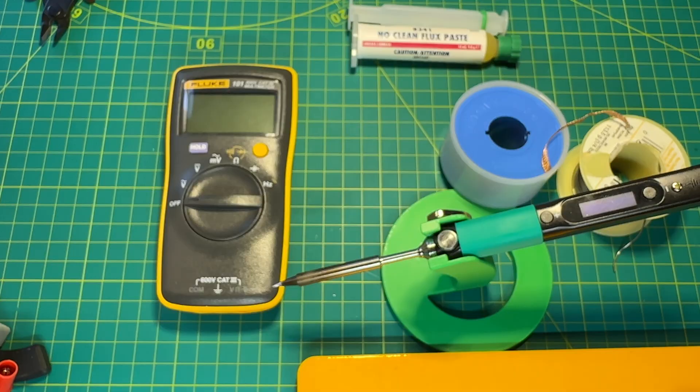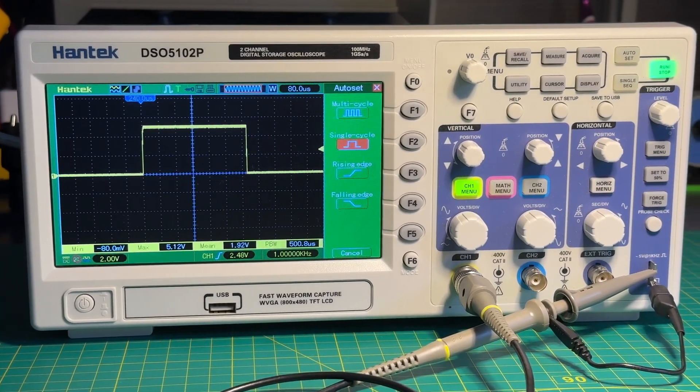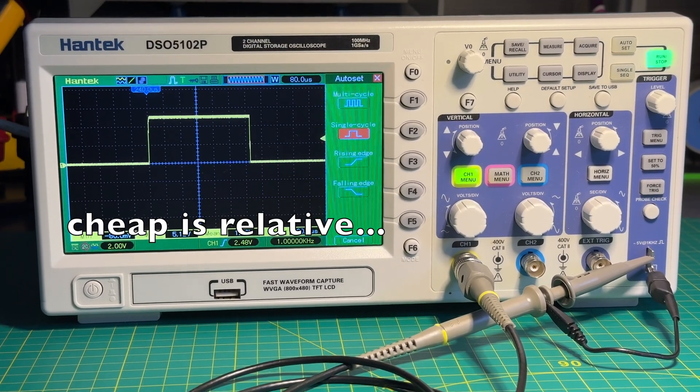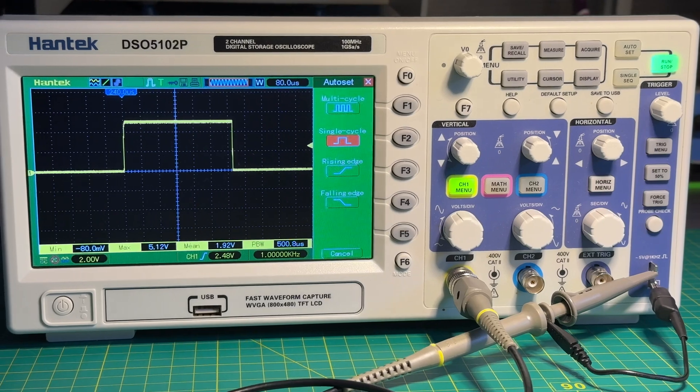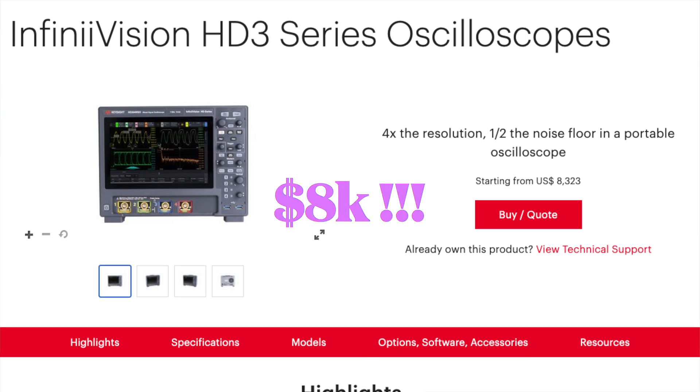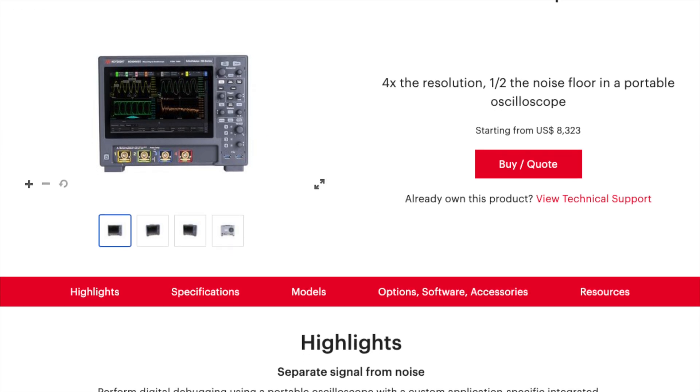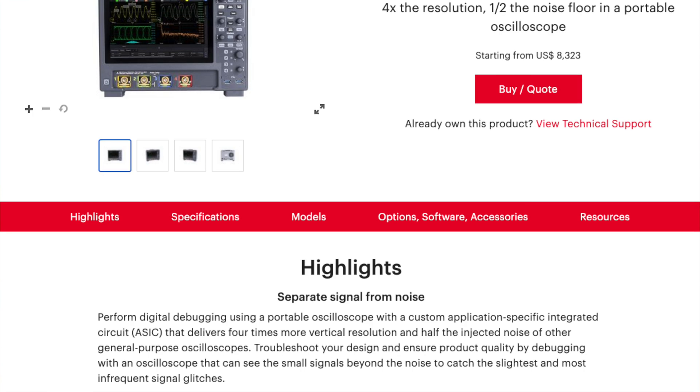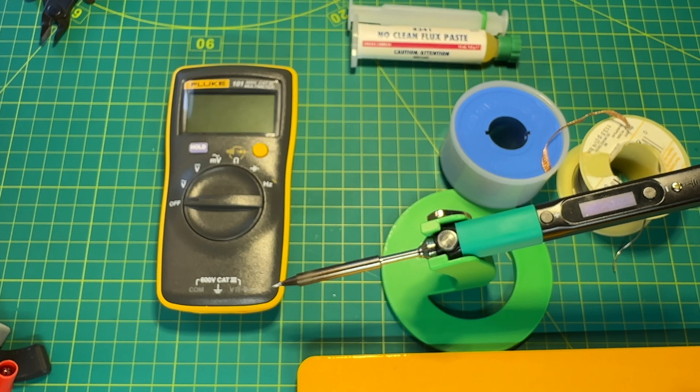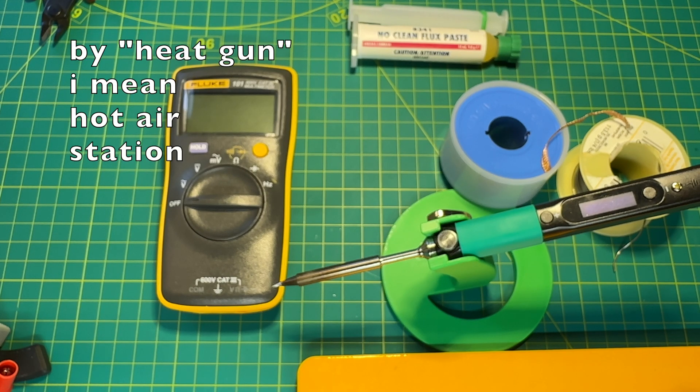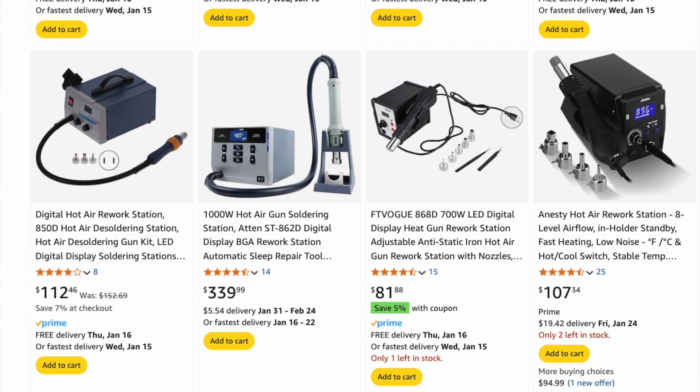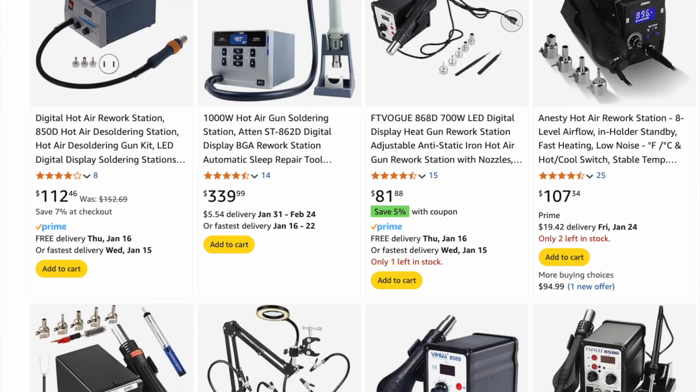At some point, you will inevitably want an oscilloscope. I'm using a very cheap Hantek oscilloscope. It does most of what I need. Of course, it would be nicer to have one of those Keysight devices, but they're very expensive, and I can't justify spending that much money on something I use only occasionally. And for surface mount work, you will most likely need a heat gun. Once again, there are lots of different options, so get whichever one works for you. Just make sure the temperature and airflow are adjustable.